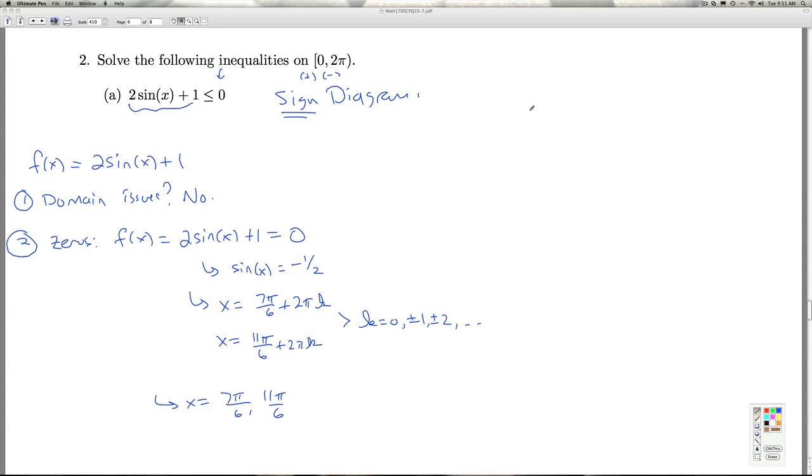We now make a sign diagram for the function. We go to a number line on a finite length interval here. We start at 0, we include that. We go up to 2π, but we do not include 2π. We put these numbers on there: we've got 7π/6 and 11π/6. At those two places, the function equals 0, so we put 0s above there.